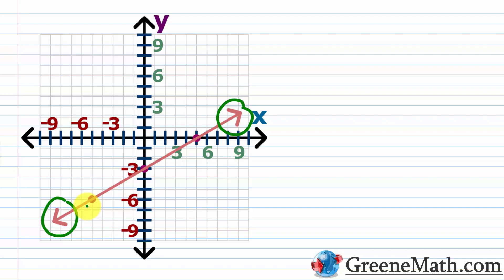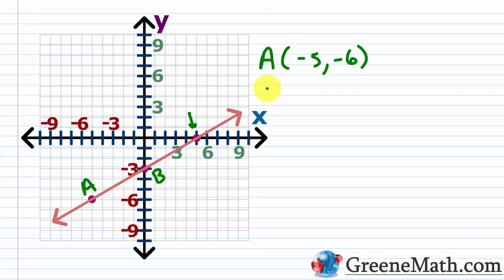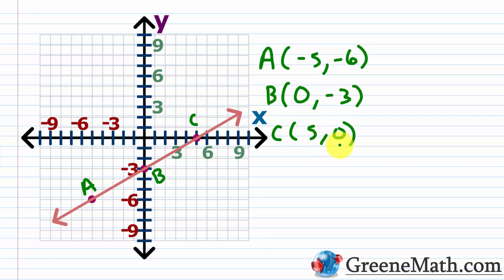From the midpoint to one endpoint is going to be the same distance as from the midpoint to the other endpoint. Looking at our graph, we have three plotted points. Let's label these A, B, and C. Point A is at negative five, negative six. Point B is at zero, negative three. Point C is at five, zero. B is going to be the midpoint for the line segment from A to C. The distance from A to B and the distance from B to C are going to be the exact same distance.